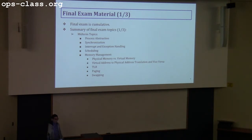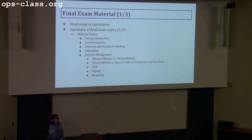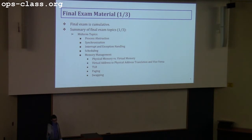We then discussed synchronization. You should know what a critical section is, why we need to protect it, and how to protect it. You've been presented with and implemented various synchronization primitives: sleep locks, condition variables, and reader-writer locks. You should understand how to implement them and have a good understanding of deadlocks, starvation, and race conditions — their definitions, differences, and how to avoid them.